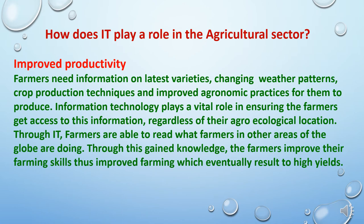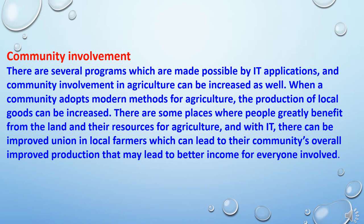Now we will study how information technology is playing a role in the agricultural sector. The role in improving productivity: farmers need information on latest varieties, changing weather patterns, crop production techniques, and improved agronomic practices in order to produce. Information technology plays a vital role in ensuring that farmers get access to this information regardless of their agroecological location. Through information technology, farmers are able to read what farmers in other areas of the globe are doing. Through this gained knowledge, the farmers improve their farming skills, thus resulting in high yields.